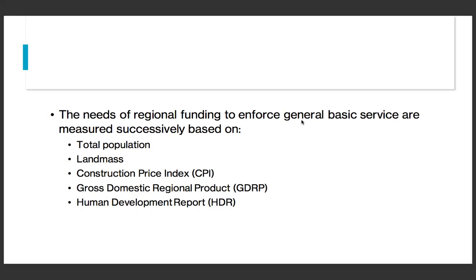Concerning this, the General Allocation Fund uses the same formula for all funds — developed and also undeveloped regions. Sometimes there is a different population between one region and another. As appropriate, the developed and undeveloped regions receive priority and attention from the government. So the purpose of the General Allocation Fund is intended for equitable development and reducing the gap.